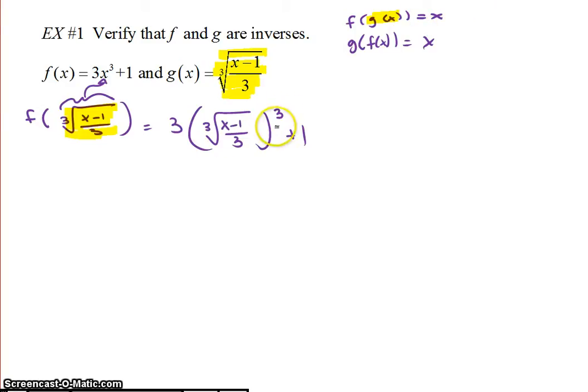Okay, so we have PEMDAS, parentheses and exponents. So I have a cube and a cube root, and the cube and the cube root undo each other, just like the square and the square root do. So the cube and the cube root here cancel each other out. So we have 3 times x minus 1 over 3 plus 1. So we did the parentheses and the exponent, so now I can multiply, so those go away. So I'm left with x minus 1 inside the parentheses, which I can remove, plus 1, and that equals x. So we did get x out like we wanted, but now we have to verify the other way.